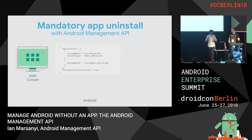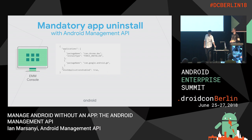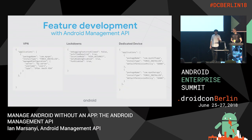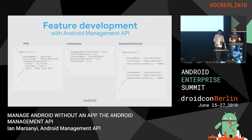Nikita is going to run through that previous example of mandatory app uninstall and show you how easy it is. Here is how the policy JSON block would look for a force-installed app — in this case, we're installing a Chrome dev version. If you need to remove that app, essentially you just remove that application from the JSON, and we'll take care of the rest. That was previously a seven-step process. Now it's simply removing an application from the list of apps you want to distribute.